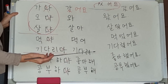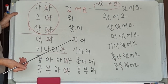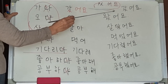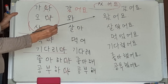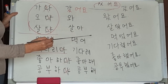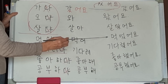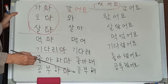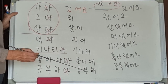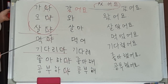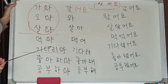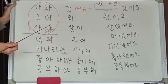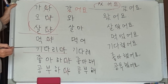One last time — I will say the present tense and you say the past. 가요 → 갔어요. 와요 → 왔어요. 살아요 → 살았어요. 먹어요 → 먹었어요. 기다려요 → 기다렸어요. 좋아해요 → 좋아했어요. 공부해요 → 공부했어요. And even if you don't know the meaning — if I say 만나요, the past tense would be 만났어요.